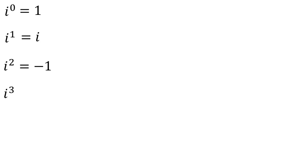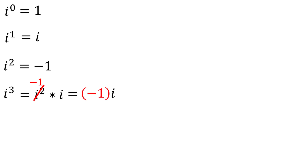For i to the third power, that's the same thing as i to the second power times i. i to the second power is equal to negative 1, so i squared times i must be negative 1 times i, or simply just negative i.